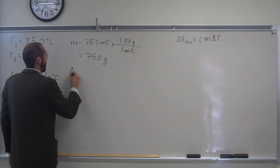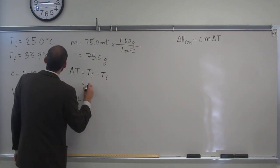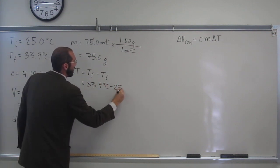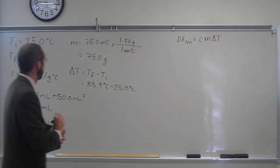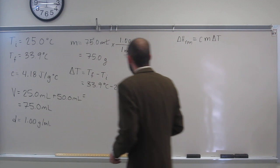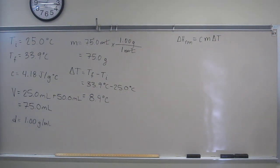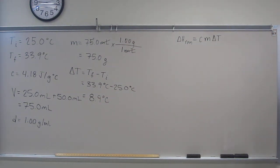So we've got the mass, and remember delta T is Tf minus Ti. So 33.9 degrees C minus 25.0 degrees C, so that's 8.9 degrees C. Okay, so we've got the change in temperature, we've got the mass, and we've got the specific heat. Should we be able to find the heat of the reaction?